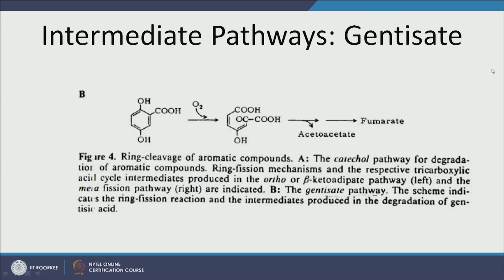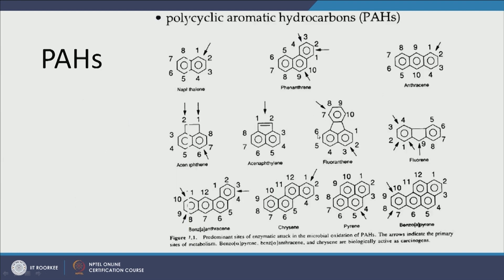In the gentisate pathway, the starting aromatic compound is broken and COOH groups are added; acetoacetate is removed and fumarate is produced, which is very easy to degrade. Now, PAHs — polyaromatic hydrocarbons — are very commonly encountered. One benzene ring is hard enough to degrade through catechol, protocatechuate, or gentisate pathways, but PAHs have multiple aromatic rings resonating together, making them far more stable and harder to degrade.